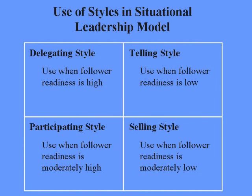The situational leadership model has four basic styles, remembered by the acronym DTPS: Delegating, Telling, Participative, and Selling. Delegating is used when followers' readiness is high. The telling style is used when followers' readiness is very low. The participative style is used when followers' readiness is moderately high. The selling style is used when follower readiness is moderately low. The ideal style would be the participative style, which many leaders aspire to achieve.